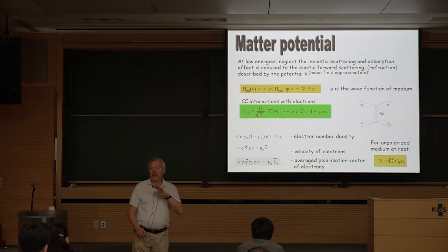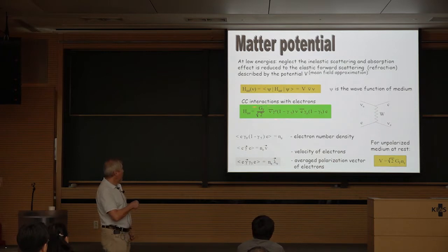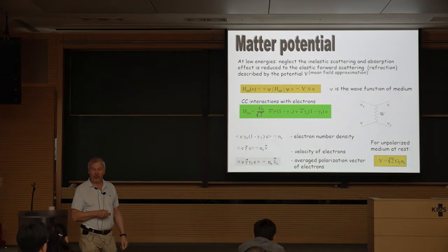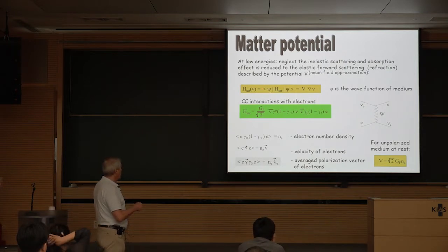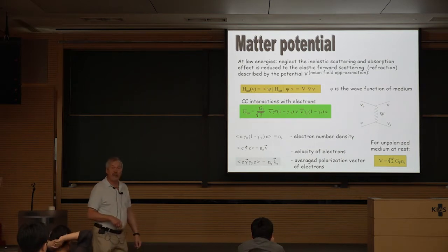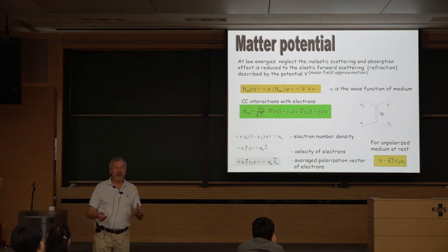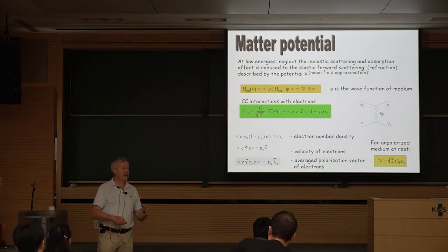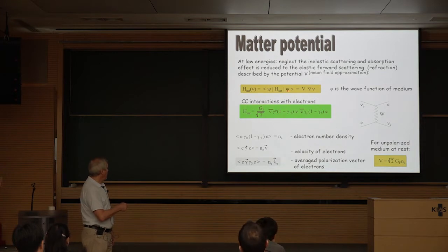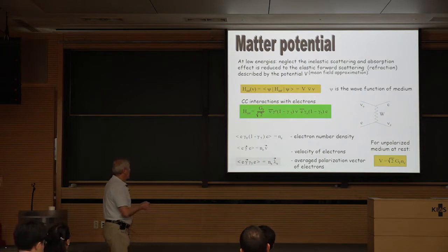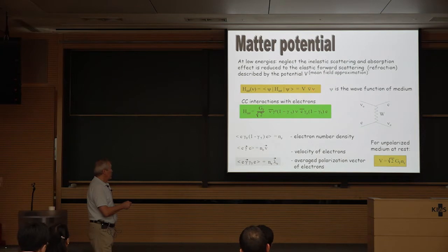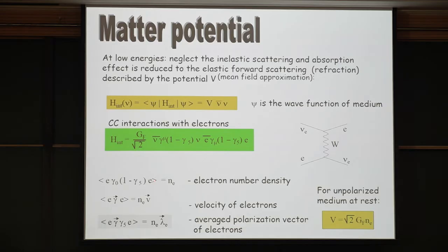To compute the matter potential, consider the Hamiltonian of charge-current interactions of neutrinos with electrons. You compute the matrix element where Ψ is the state of the medium. For coherence, the medium state should not change — initial and final states of the medium must be the same, otherwise you transfer momentum to the medium and destroy coherence. Using this Hamiltonian you find that the γ⁰ component of the current gives a matrix element equal to the number density of electrons. This is how the number density of electrons enters the potential, with the remaining factor being G_F√2.